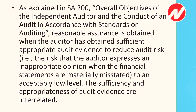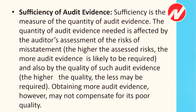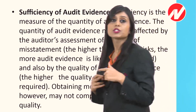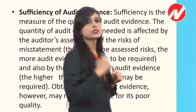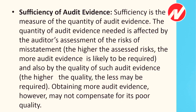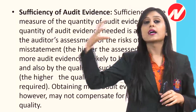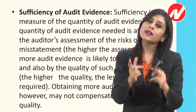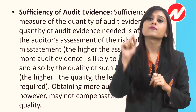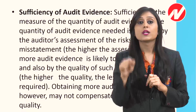The sufficiency and appropriateness of audit evidence are interrelated. Sufficiency is the measure of the quantity of audit evidence. The quantity of audit evidence needed is affected by the auditor's assessment of risk of material misstatement — the higher the assessed risk, the more audit evidence is likely to be required. It is also affected by the quality of such audit evidence — the higher the quality, the less quantity may be required. Obtaining more audit evidence, however, may not compensate for its poor quality.